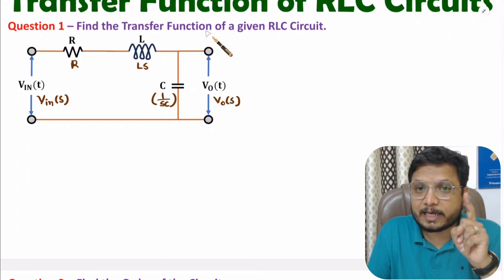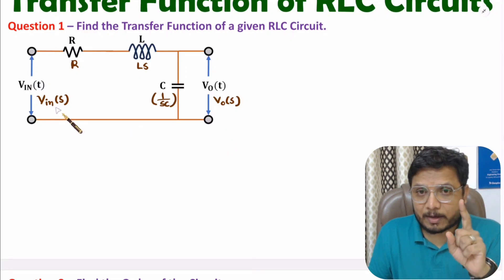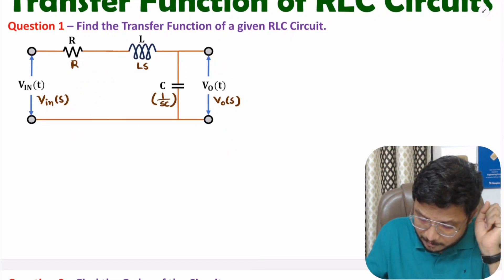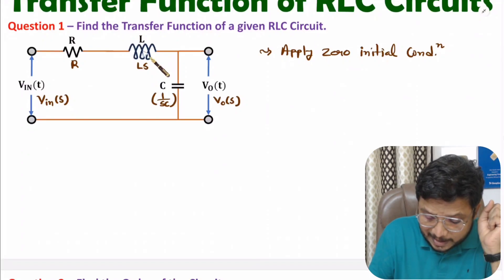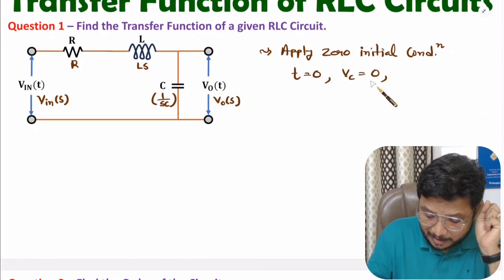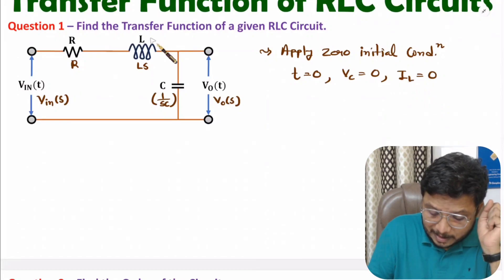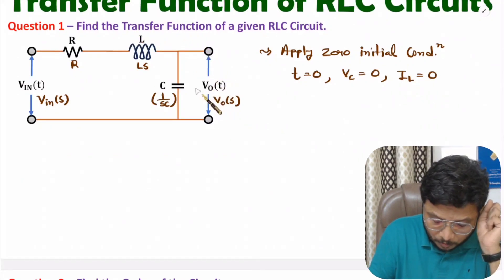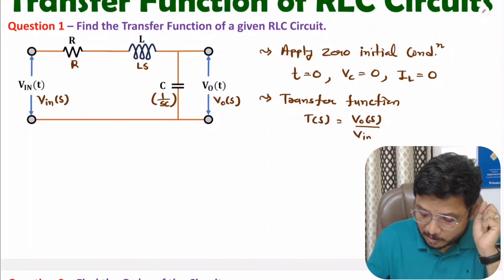To get the transfer function, first of all we need to consider zero initial conditions. The reason is that zero initial conditions are not given with this circuit, so we assume them. Zero initial condition means that at time t = 0, the energy inside the inductor and capacitor is zero — voltage across the capacitor is zero, and current through the inductor is also zero. Transfer function is the ratio of output to input, so transfer function T(S) = Vo(S) / Vin(S).